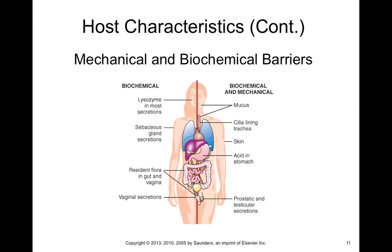Throughout your body, there are mechanical and biochemical barriers that also aid the immune system — not necessarily immune cells, but parts of an immune-type barrier that help prevent infection. An example of biochemical barriers would be the enzyme lysozyme, found in secretions like tears, saliva, and mucus. In tears, lysozyme breaks down bacterial cell walls and thereby prevents infection of the eyes. Sebaceous glands also have immune elements incorporated into the oil secretions of skin and hair to prevent infection.